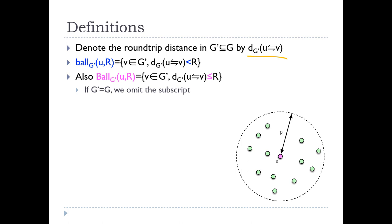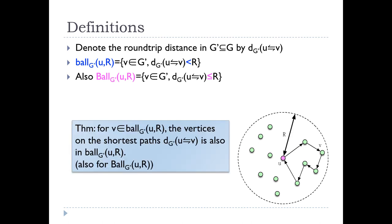If G' is the original graph G, we can omit the subscript G'. It is easy to see that for every vertex V in G', the vertices on the shortest path between U and V in G' are also in the ball B(U, R).